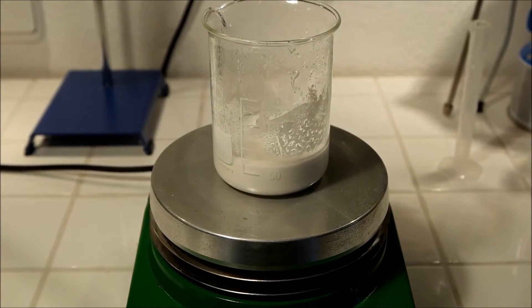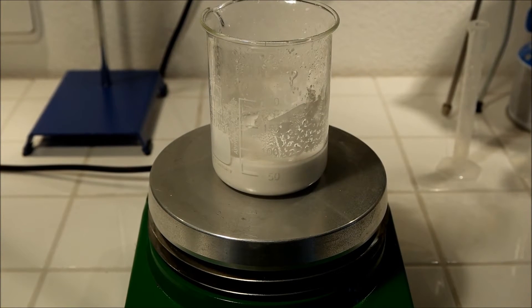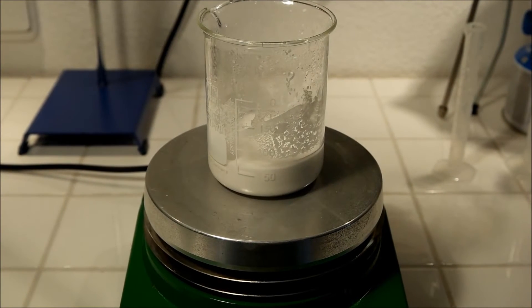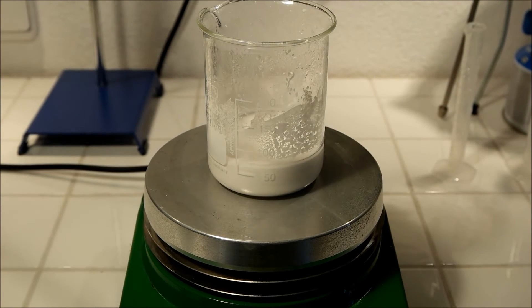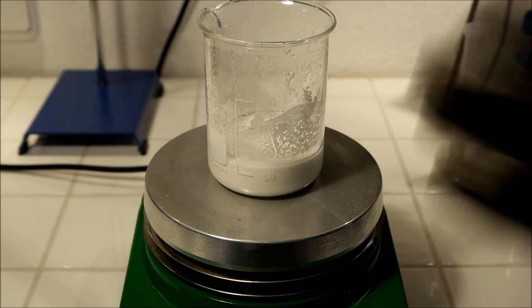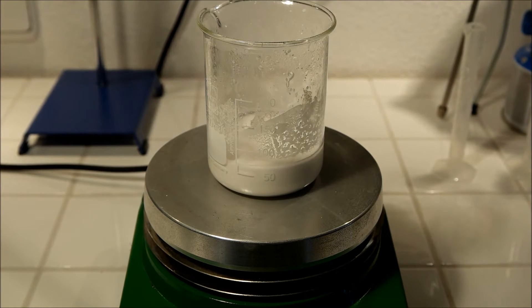That's how the beaker looks after the reaction is completed. If my calculations were right, then everything should have reacted. So there's no HCl in it and no barium carbonate, just barium chloride and 50 grams of it. But that's only a theory. I don't think that it worked that good.